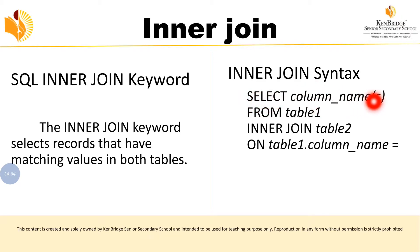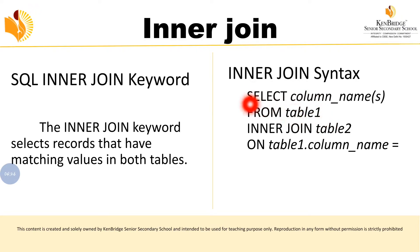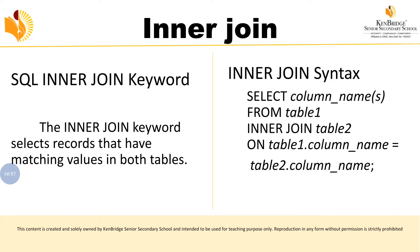Here is the syntax of inner join. The query always starts with SELECT. You write the column names you want to select, then FROM table1, then the keyword INNER JOIN table2, then ON table1.column_name = table2.column_name. Both tables will have a related column, and the join will be performed based on that.